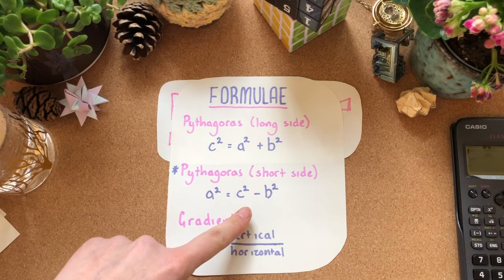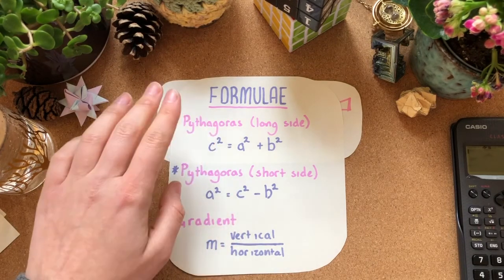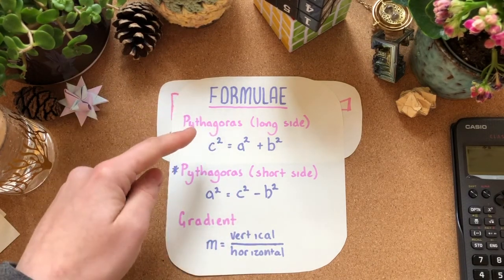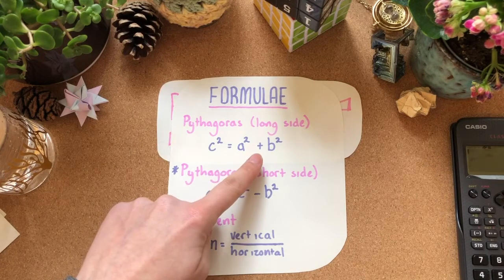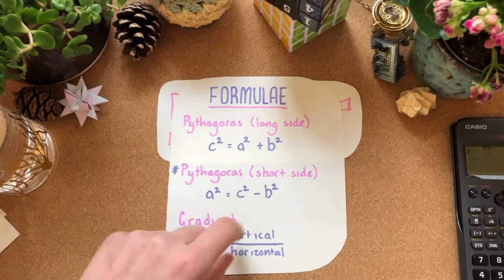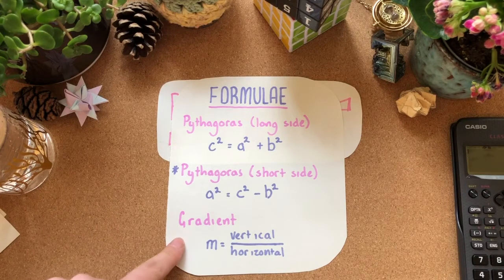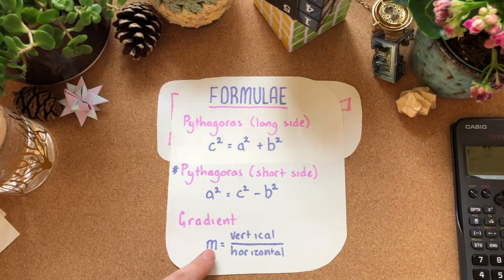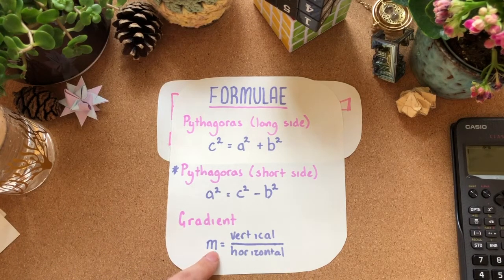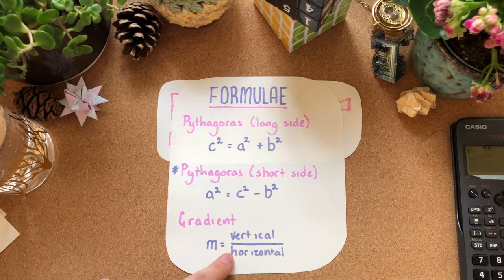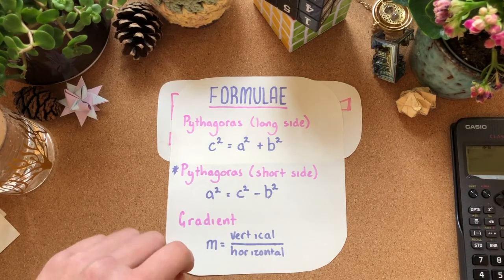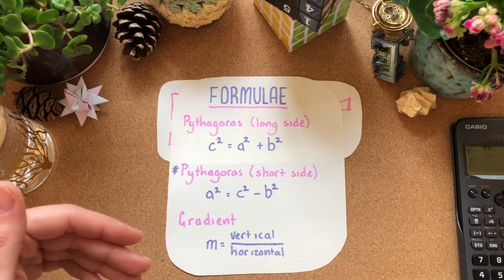It really doesn't make a difference which way around the letters are but just remember hypotenuse long side if you're looking for that it's going to be an add and if you're looking for the short side it's going to be a subtract. And we'll also need to use the gradient formula which is m which stands for gradient is vertical over horizontal and just remember that over or a fraction is just a fancy way of saying divide.